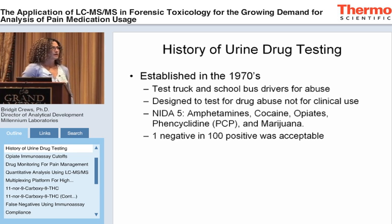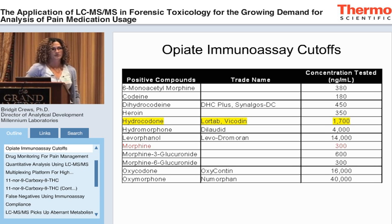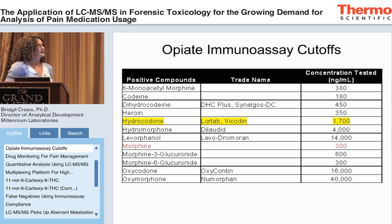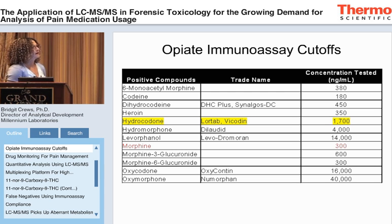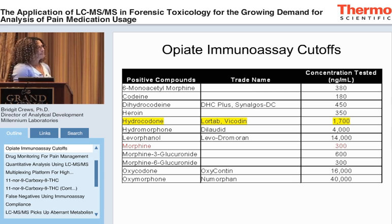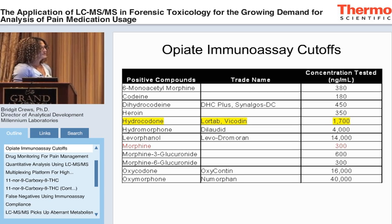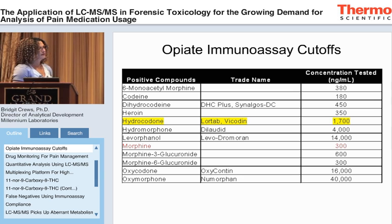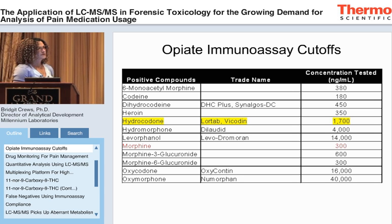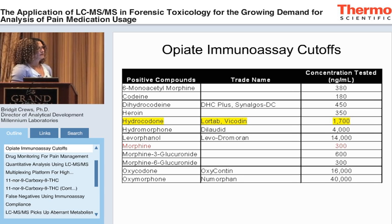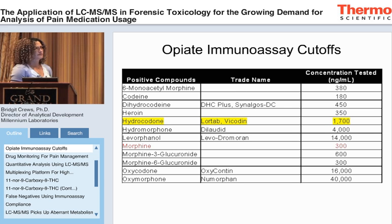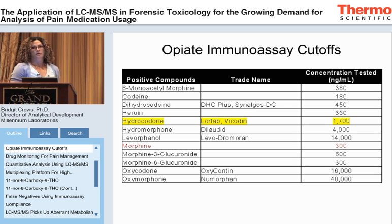To give you an idea of the cutoff you achieve with an immunoassay, here's an opiate immunoassay cutoff. If you look at what concentrations it screens for, it's really targeted towards morphine. Hydromorphone is not very specific, and oxycodone is also not very specific, which is why they ended up developing an independent immunoassay for oxycodone.